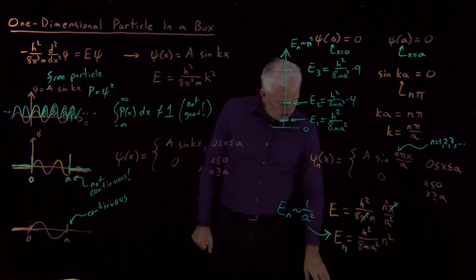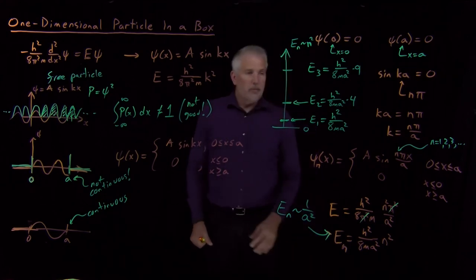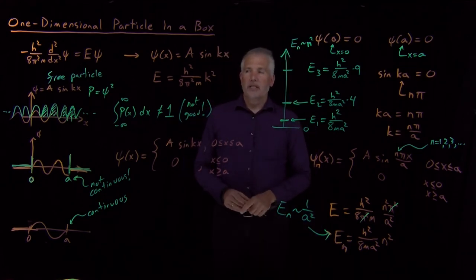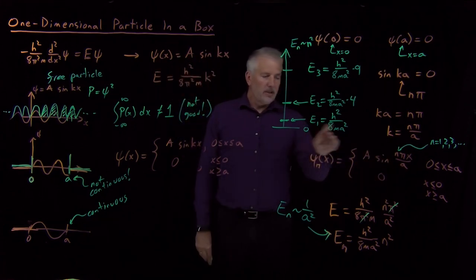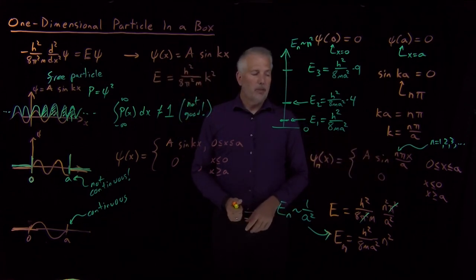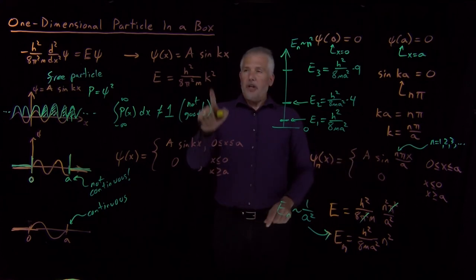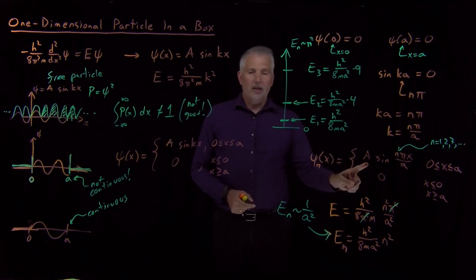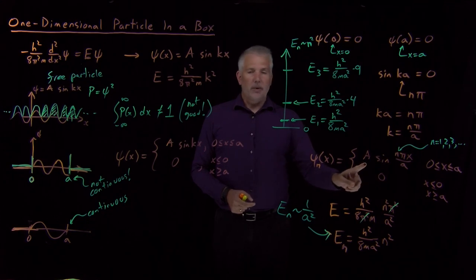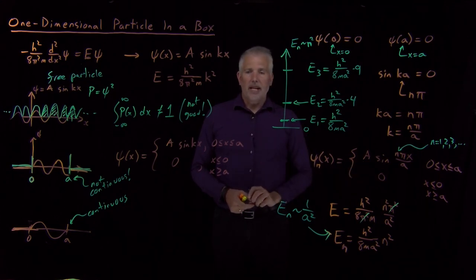That's all we have to say about the particle-in-a-box, with one exception. We've described the wave functions that solve the particle-in-a-box problem and determined what k must be, but we haven't said anything about the constant A that multiplies the wave function out front. The next thing we'll talk about is the meaning of that constant A and how to determine its value.